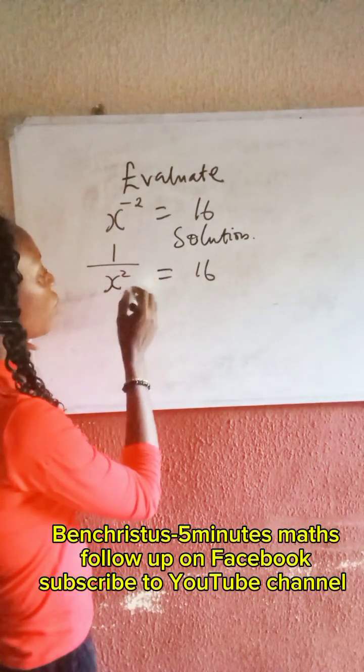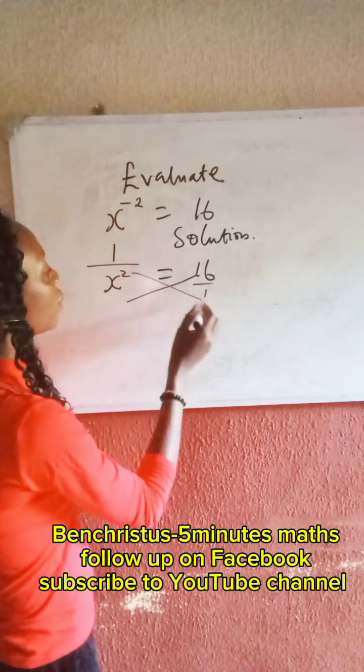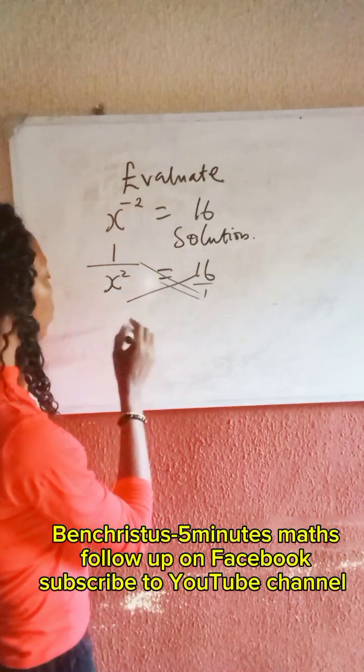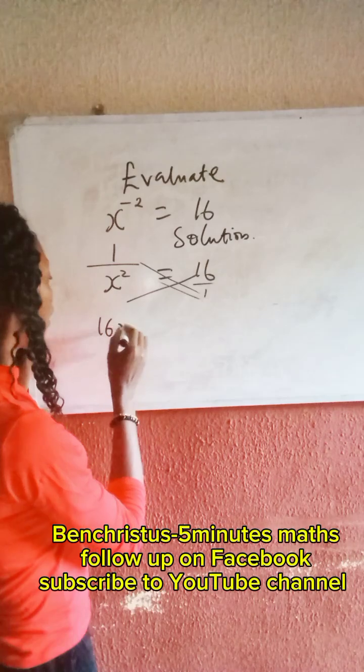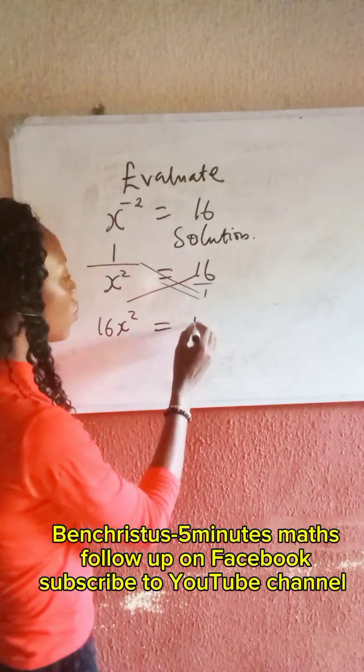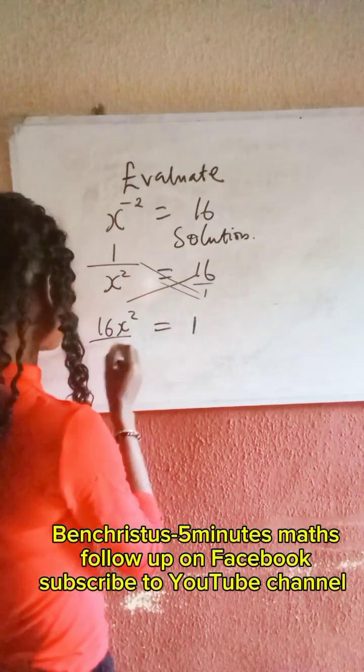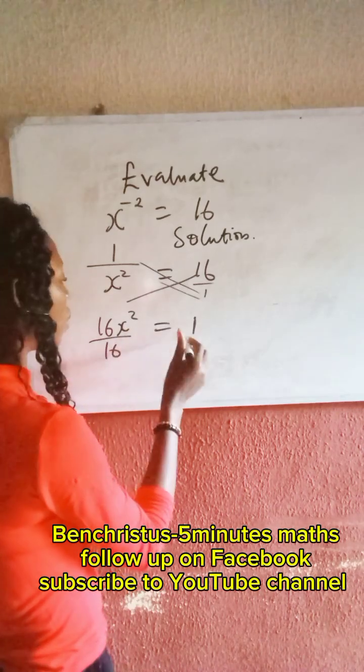So let us cross multiply it. So this will multiply, this will multiply, this will have 16x squared equal to 1. So now let's divide both sides by 16 to make x squared free.